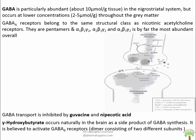GABA is particularly abundant — about 10 micromole per gram in tissue in the nigrostriatal region — but occurs at lower concentration, about 2 to 5 micromole per gram, throughout the gray matter. The GABA-A receptor belongs to the same structural class as the nicotinic acetylcholinergic receptor, and exists as a pentamer. Subtypes alpha-1 beta-2 gamma-2, alpha-2 beta-3 gamma-2, and alpha-3 beta-3 gamma-2 are the most abundant overall, found in the brain.